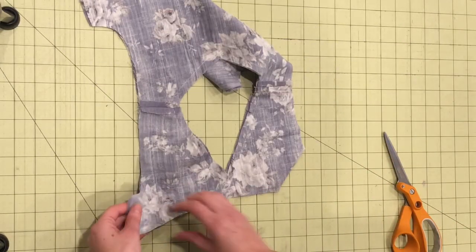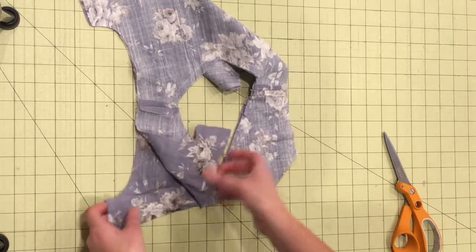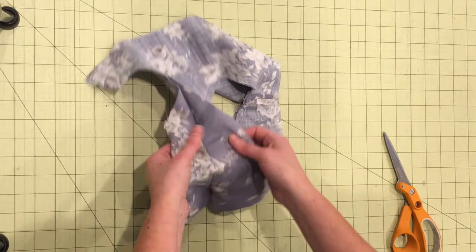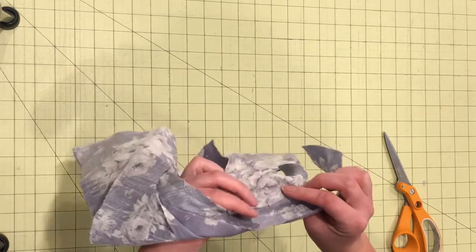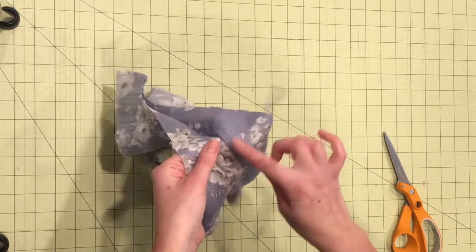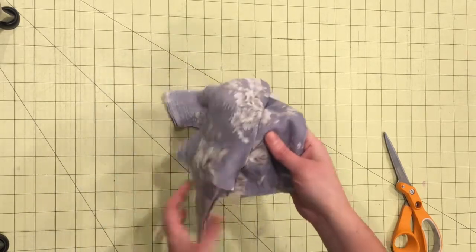Then you're going to turn your bodice right side out by flipping it through the middle of the neckline. You want to press your seam allowance towards the lining of the bodice and you're going to sew it to the lining just along the edge.